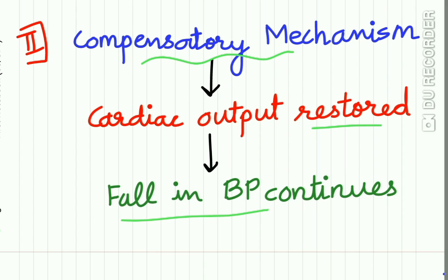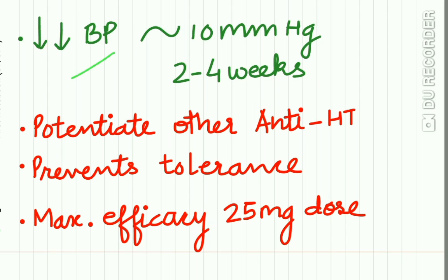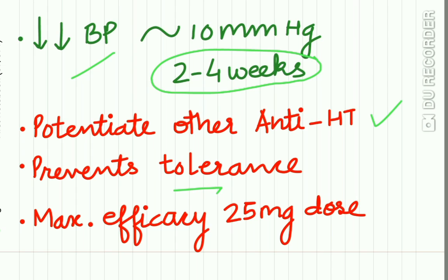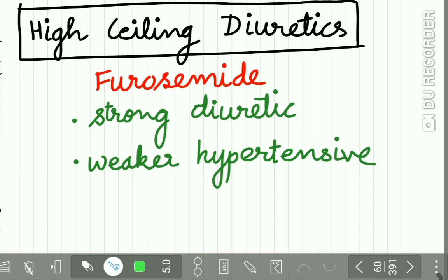Despite the compensatory restoration of cardiac output, the fall in BP continues — this is the mechanism of action of diuretics. The fall in BP with thiazides is approximately 10 mmHg and occurs over two to four weeks. Thiazides potentiate other anti-hypertensive drugs, prevent tolerance to certain drugs, and have maximum efficacy at a dose of 25 mg.